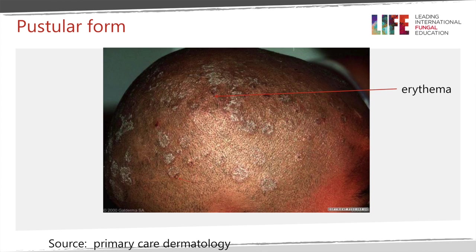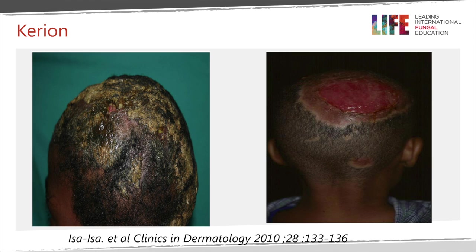These pictures show the pustular form — a mild form of the inflammatory type. You see multiple scaly lesions all over the scalp, pustules, and surrounding erythema where the arrow points. This may be harder to appreciate on dark-skinned patients, but with careful examination you can identify three things: erythema, pustules, and the underlying scaly dermatosis.